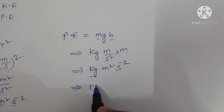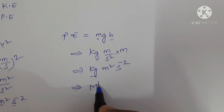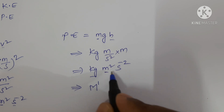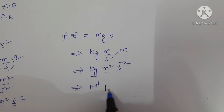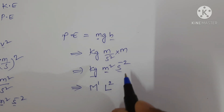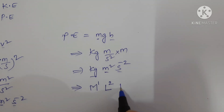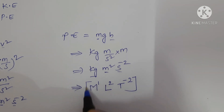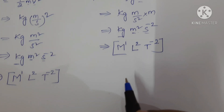Now let us write the dimensional formula. kg is the unit for mass, so M power 1. Meter is the unit for length, so L power 2. Second is the unit for time, so T to the power of minus 2. This is the dimensional formula for potential energy.